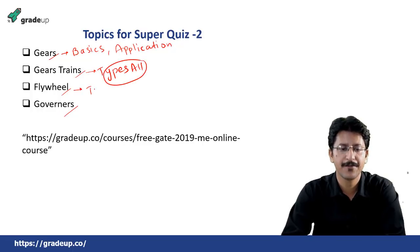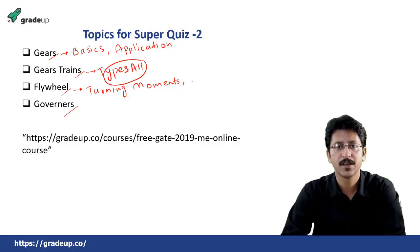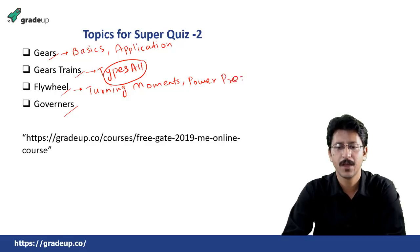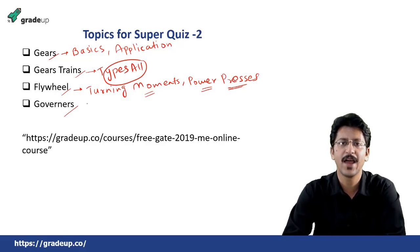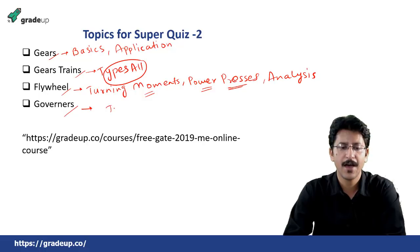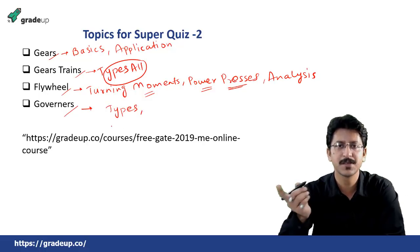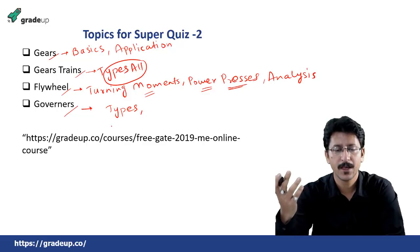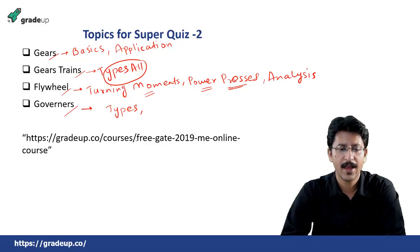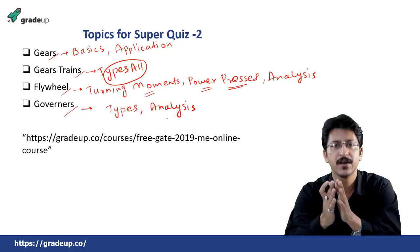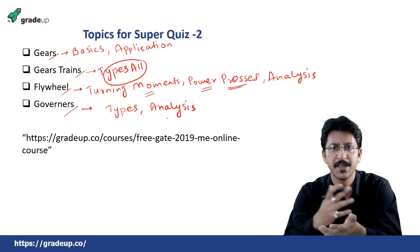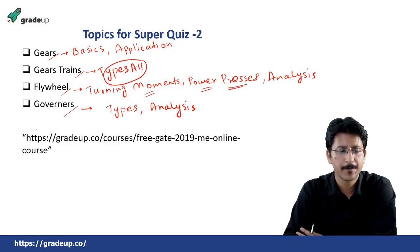For the flywheel, we will cover the turning moment concepts, the concept of turning movements, power presses, and the analysis part. For governors, we will cover all types and categories — the dead load category, spring control, and also the analysis part including stable governor, isochronous governor, effort, sensitivity, and stability.